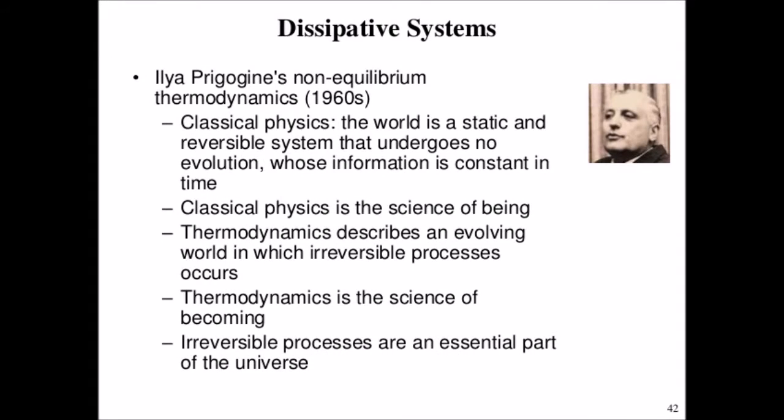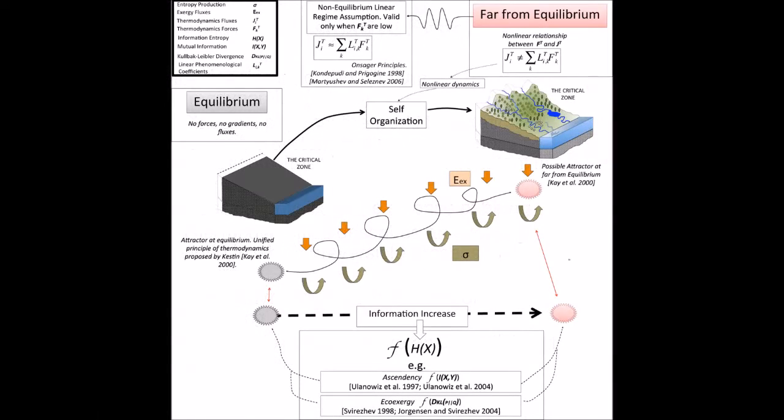A dissipative system is a thermodynamically open system which is operating out of, and often far from, thermodynamic equilibrium in an environment with which it exchanges energy and matter. A dissipative structure is a dissipative system that has a dynamical regime that is in some sense in a reproducible steady state.